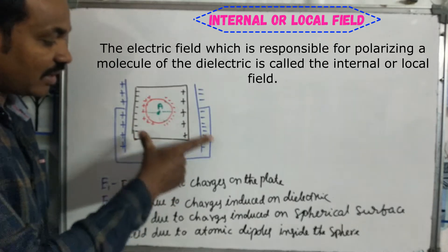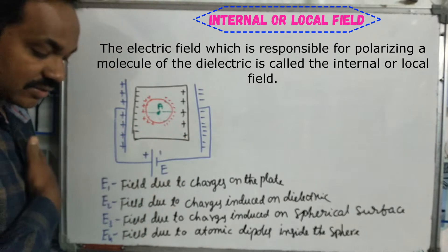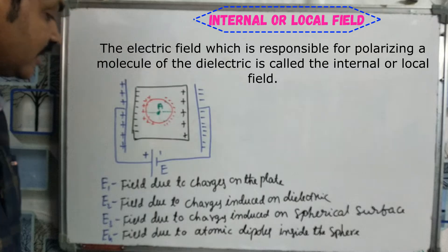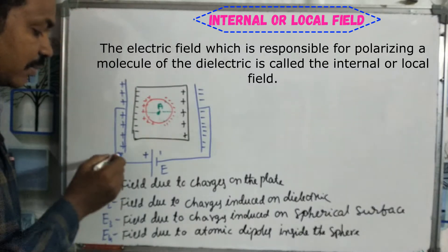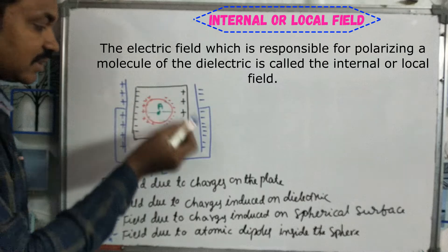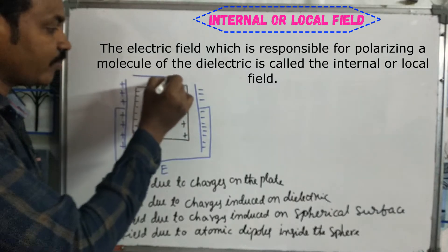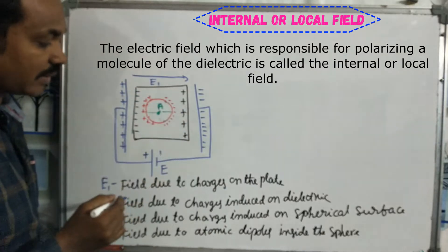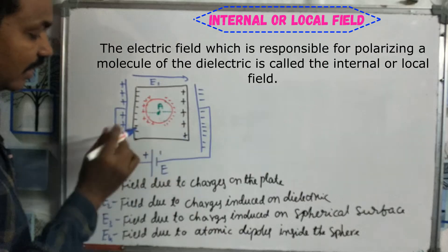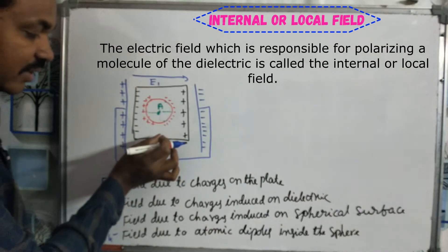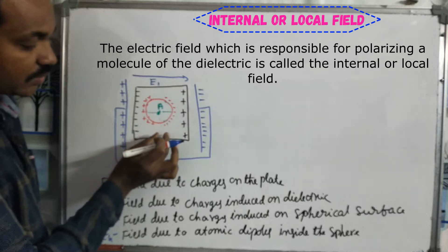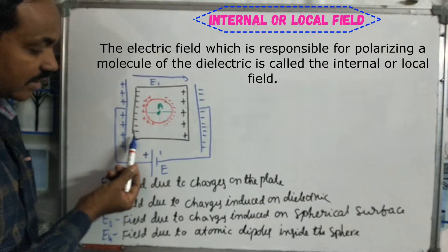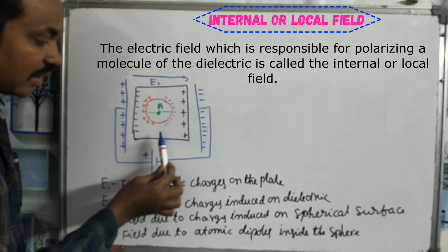We are applying an electric field. The positive to negative electric field is applied across the dielectric. In this dielectric material, the molecules have positive-negative charge arrangements, which are different for each molecule.